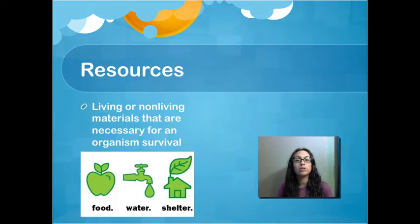Alright, so our first word is resources. So, in order to survive, animals need certain things. And again, we talked about this in class. So, the big three, I like to call them the big three. The main things that animals need to survive: food, water, and shelter. And you're going to hear the big three come up a lot as we go through this unit.